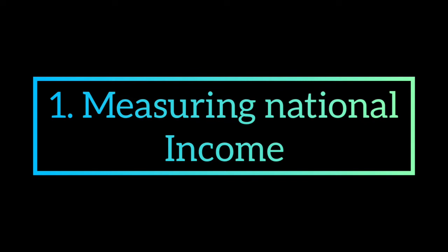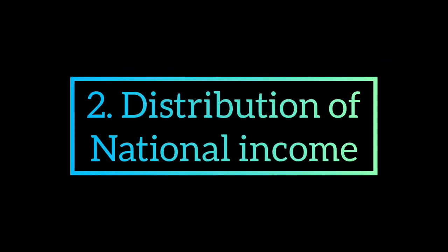Number one: measurement of national income. Money helps in the measurement of national income. Without the existence of money, it was not at all possible to measure national income under the barter system. This is done when the values of various goods and services produced in a country are expressed in terms of money and then added up for measuring national income.